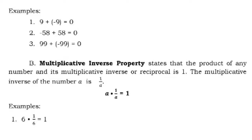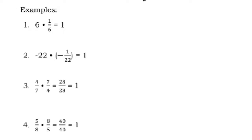For multiplicative inverse: the product of any number and its multiplicative inverse or reciprocal is 1. The multiplicative inverse of A is 1 over A, so A times 1 over A equals 1. For example: 6 times 1 over 6 equals 1; negative 22 times negative 1 over 22 equals 1; 4 over 7 times 7 over 4 equals 28 over 28, which is 1; and 5 over 8 times 8 over 5 equals 40 over 40, which is 1.